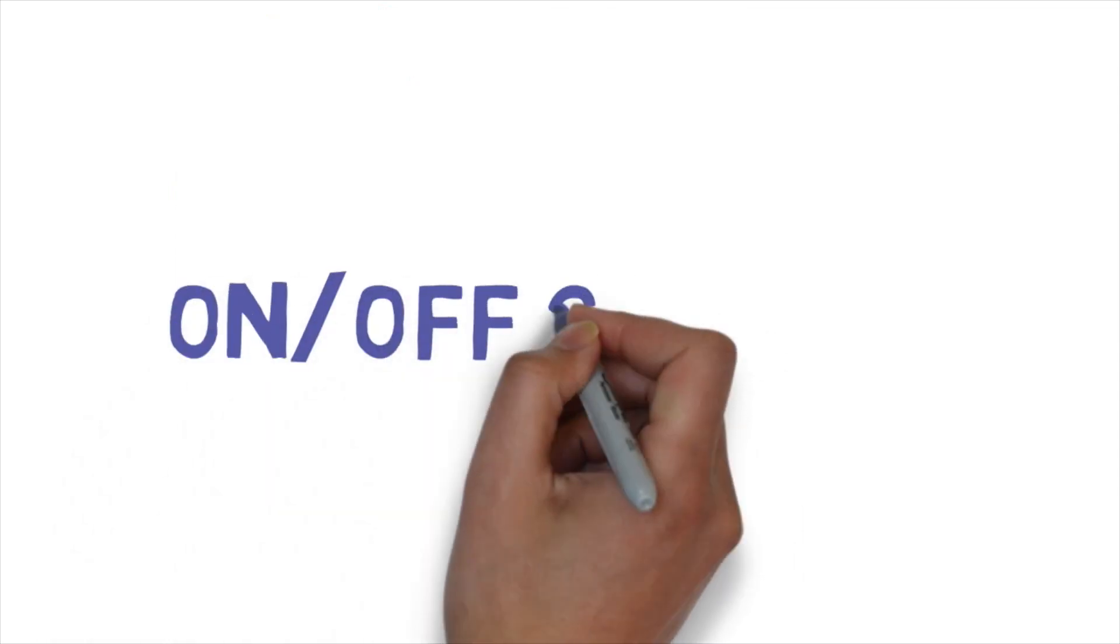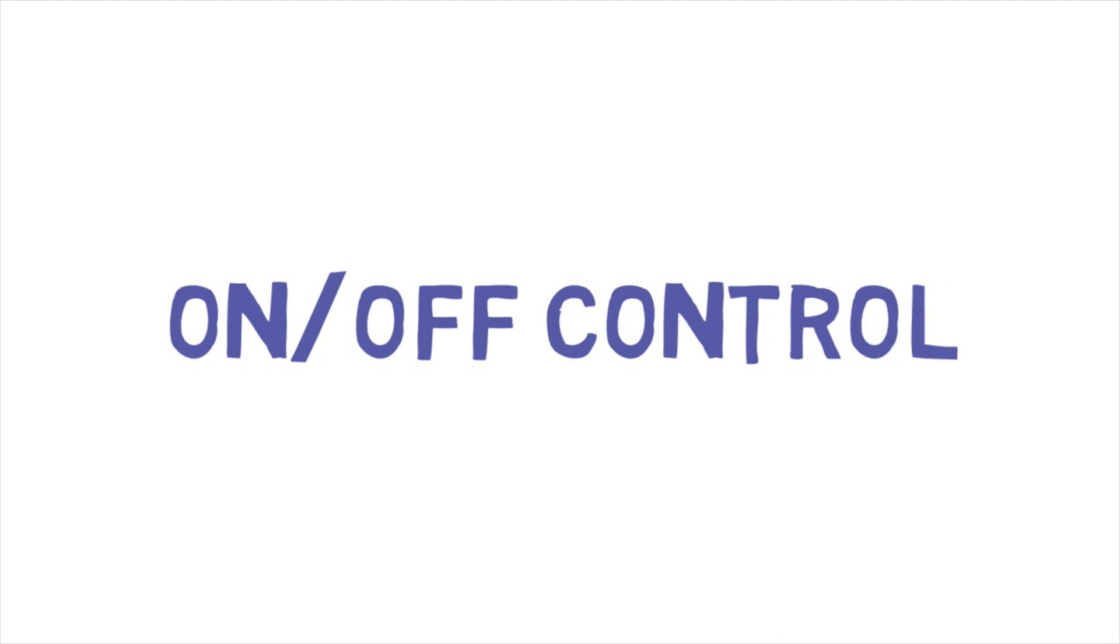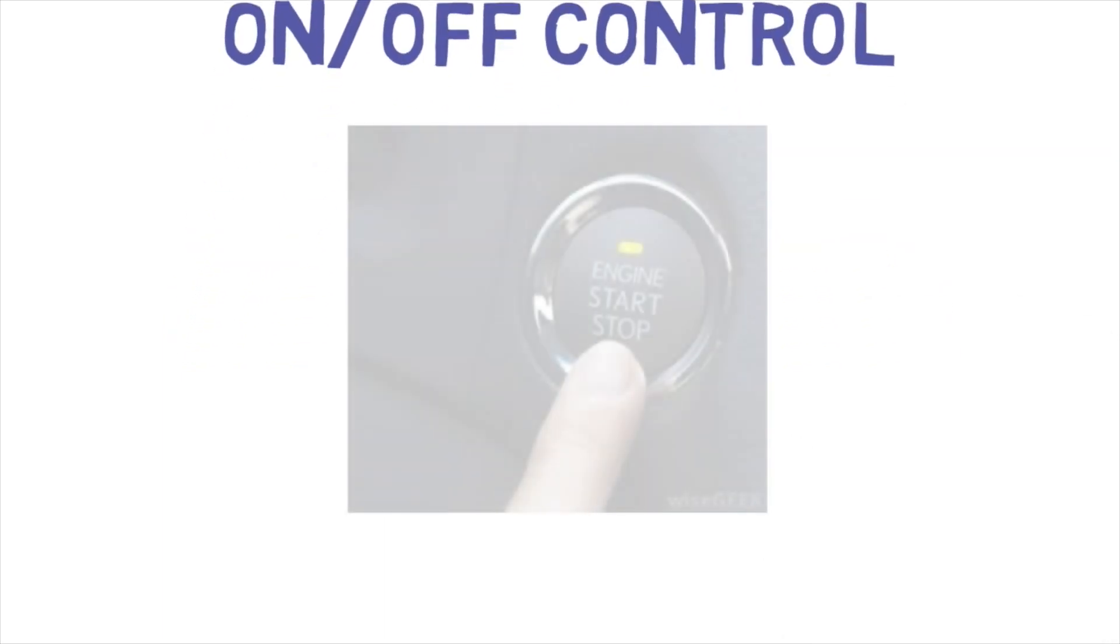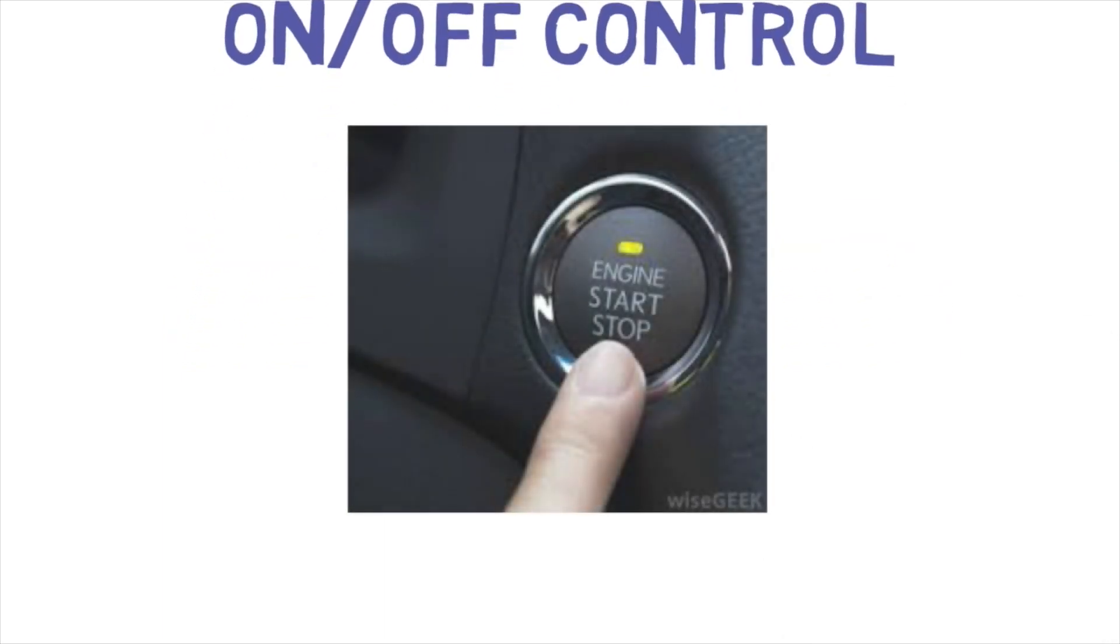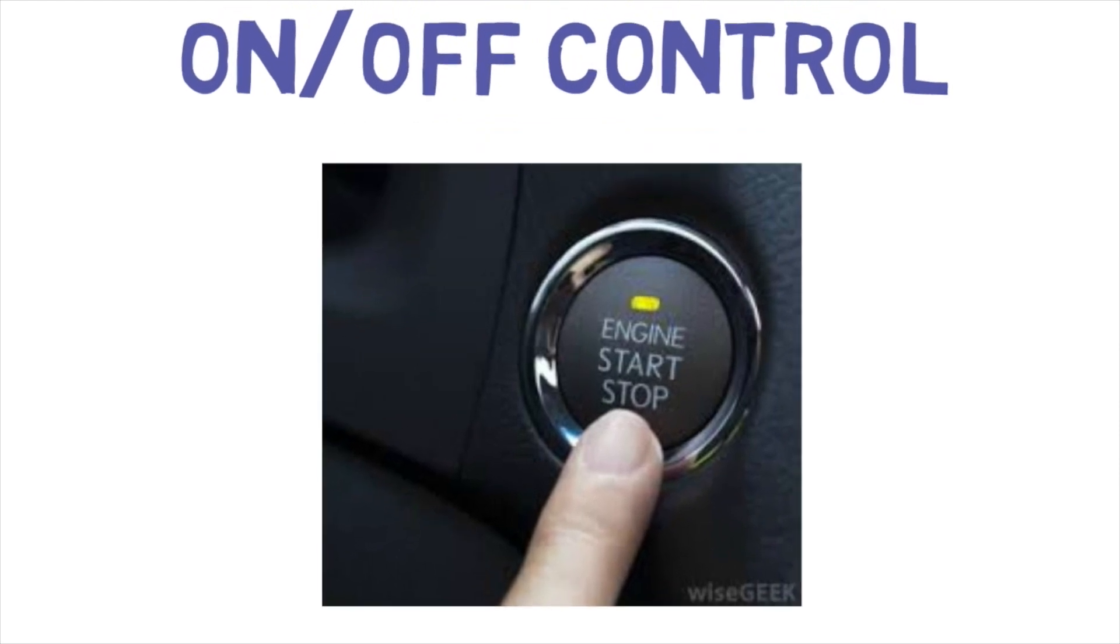The first type of control I want to talk about is on-off control. You could think of it as something like the key in your ignition. It turns the car on or off. In HVAC parlance, it's typically the thermostat. It sends a signal, an on-off signal, to turn the unit on or turn it off.